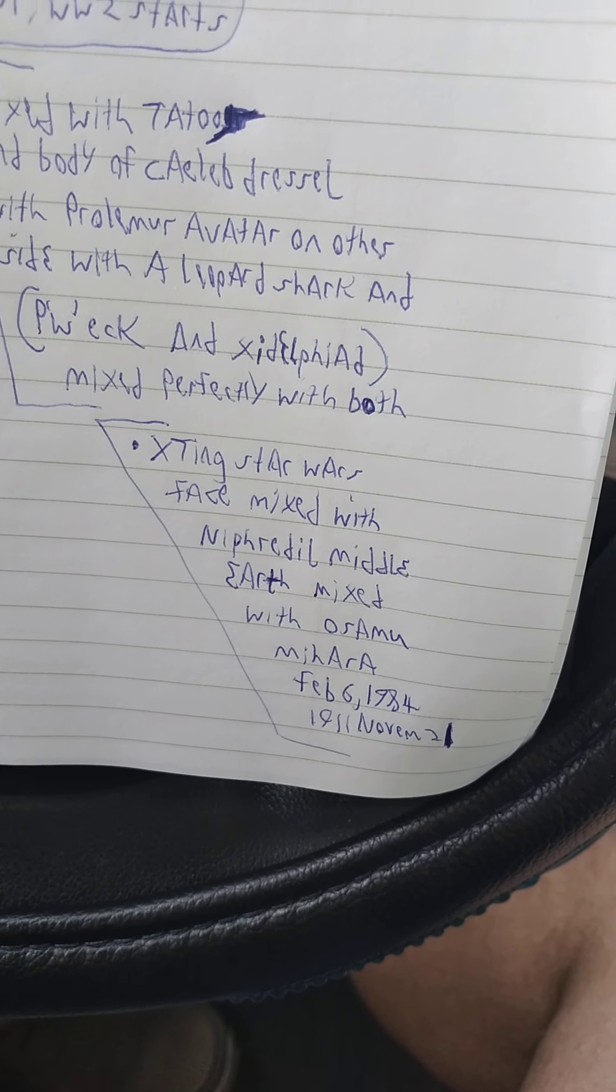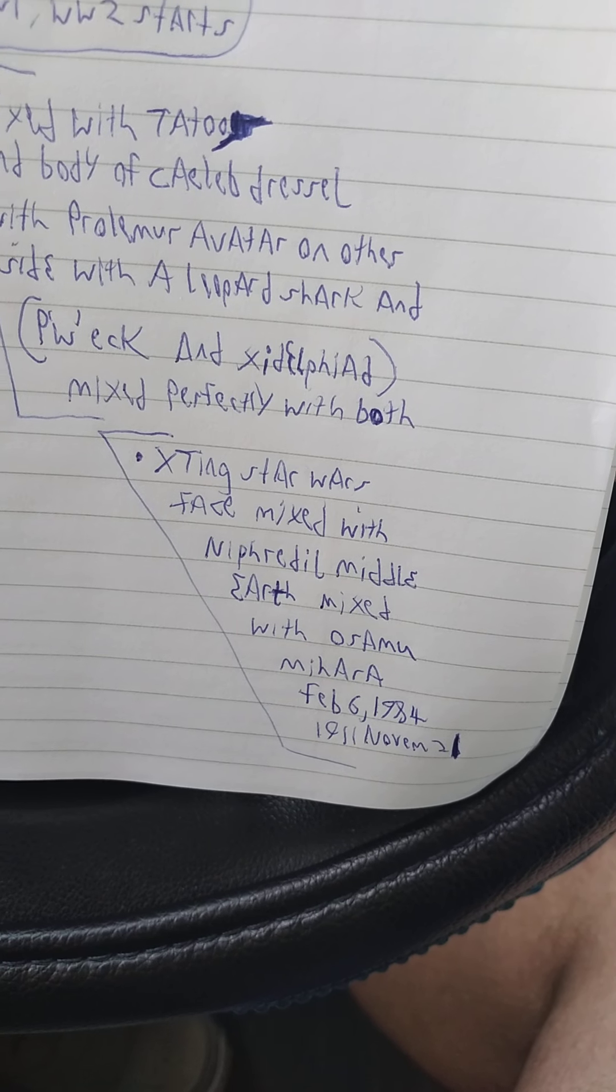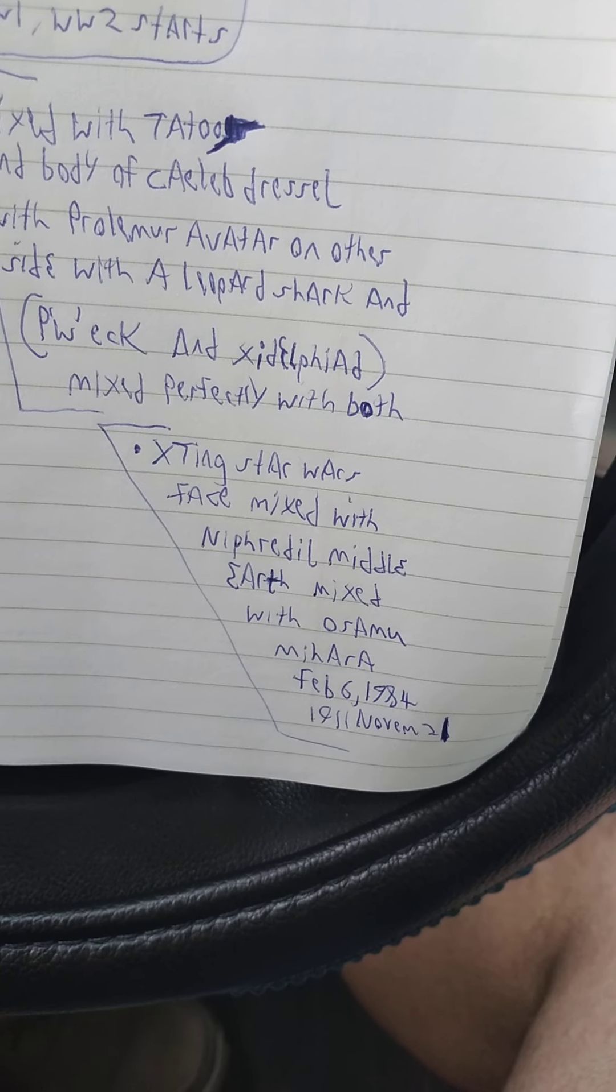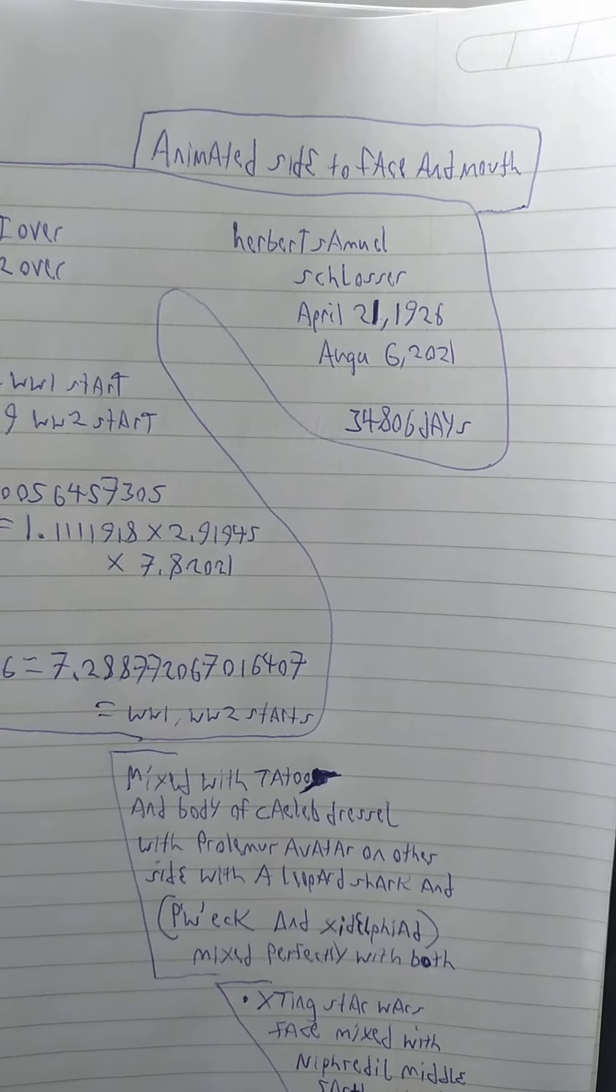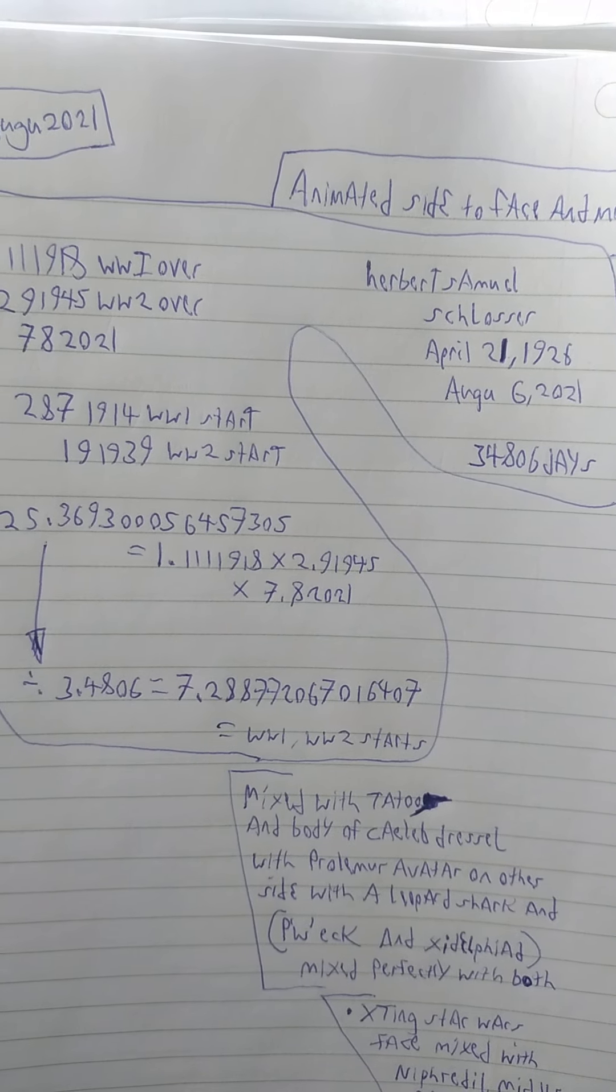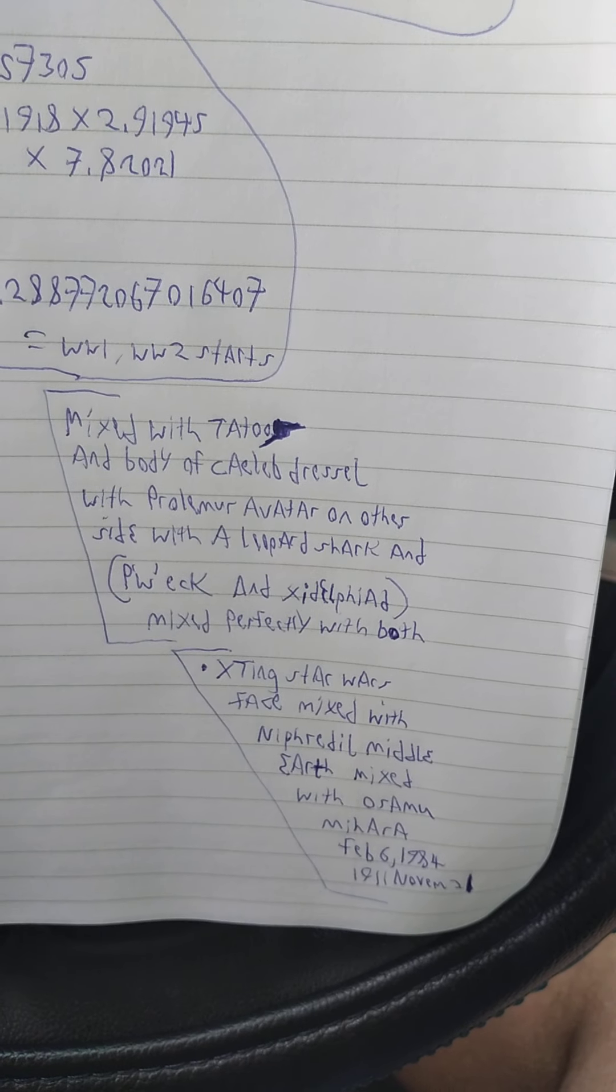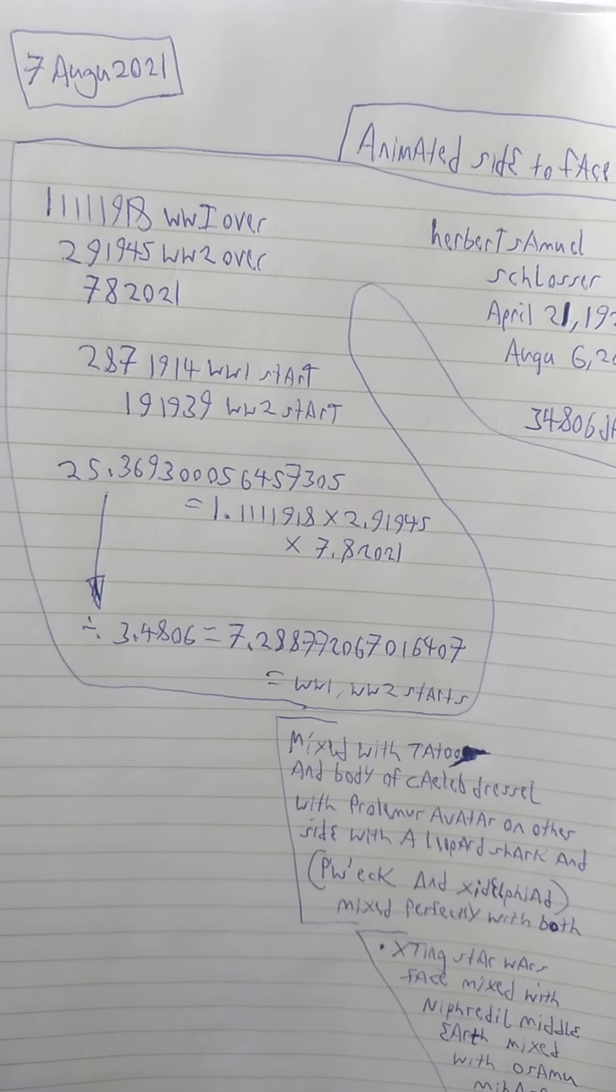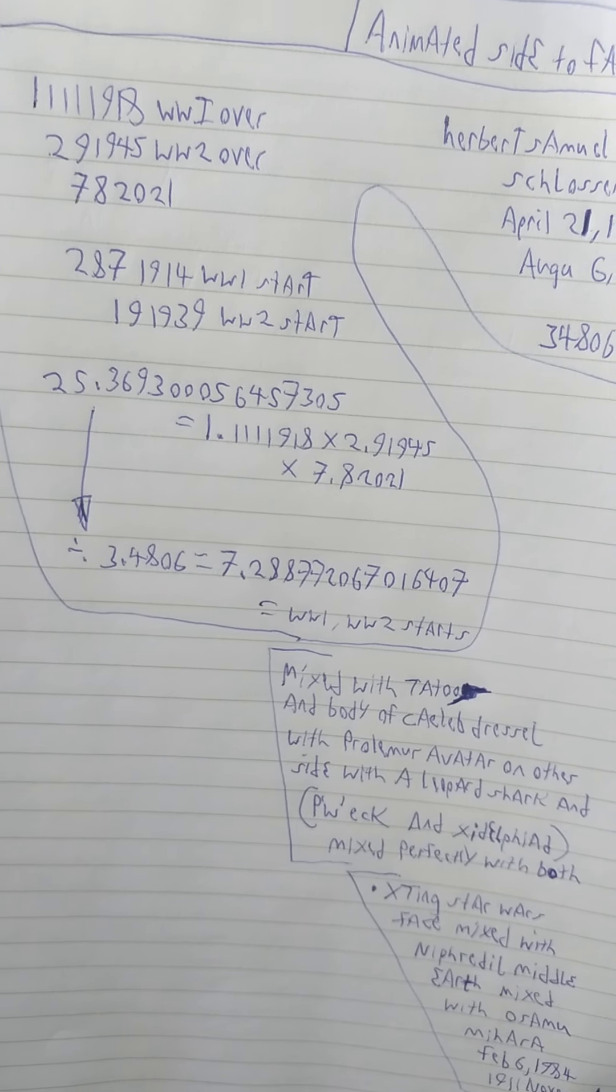And then X-Ting Star Wars Face mixed with Nifredil Middle-Earth mixed with Asomu Mihera, February 6th to November 21st. This is the creature, nothing to be scared of. Remember, it has an animated side to the face and mouth that makes it more, well, because it's mixed with that X-Ting there. It's perfect for what it will be used for.